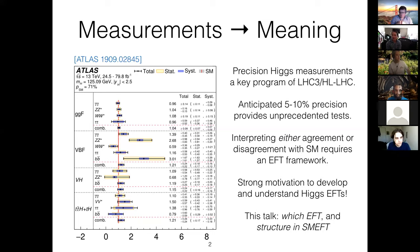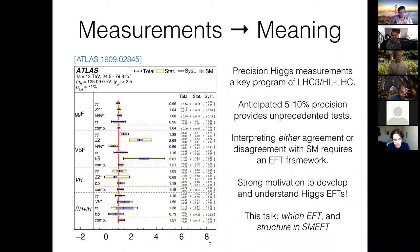I want to touch on two aspects. The first I'll roughly categorize as 'which EFT' — which EFT framework is appropriate for describing the Higgs and how to understand the differences between them. Then I want to pivot to a specific EFT framework, the Standard Model EFT framework, and talk at the end about surprising structures. Not only are these EFTs useful for interpreting data, but they also just turn out to be fascinating effective field theories on their own.